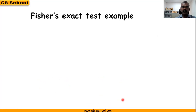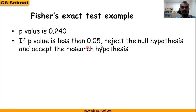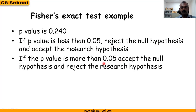How do we interpret this p-value? The p-value is 0.240, which represents the level of significance. The accepted level of significance is 0.05. If p-value is less than 0.05, reject the null hypothesis and accept the alternate hypothesis. If p-value is more than 0.05, accept the null hypothesis and reject the alternate hypothesis. Here it is 0.240, more than 0.05, so we accept the null hypothesis, stating that there is no significant association between gender and knowledge.